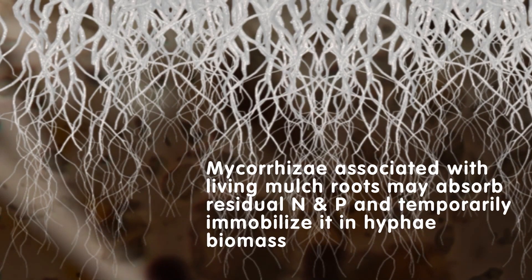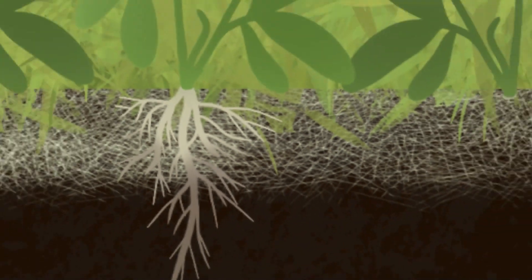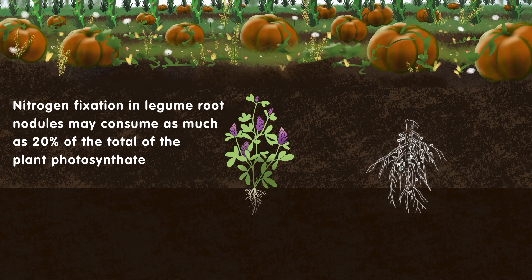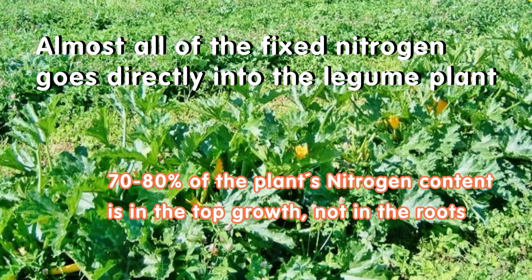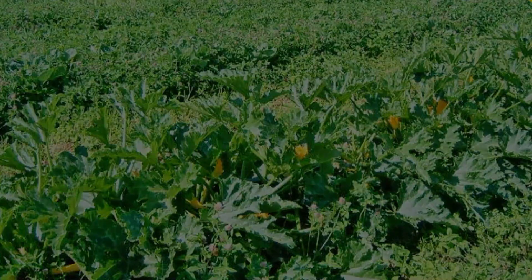Mycorrhizae and other microbes associated with living mulch and cover crop roots can temporarily absorb residual nitrogen and phosphorus and tie it up in the biomass of that microorganism. Nitrogen fixation in legume root nodules is an expensive process for the plant in terms of carbon, so we want to consider that when thinking about how we get nutrients into the soil. In perennial legumes, 70 to 80 percent of the plant's nitrogen content is in the top growth, not the root — most of the carbon is in the root. That matters when thinking about how we get nitrogen to our microbial community.